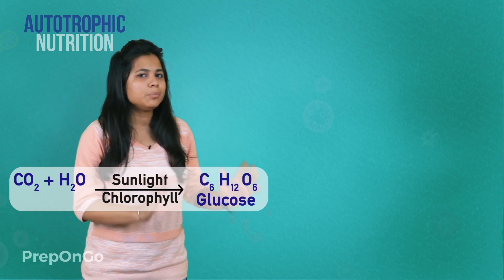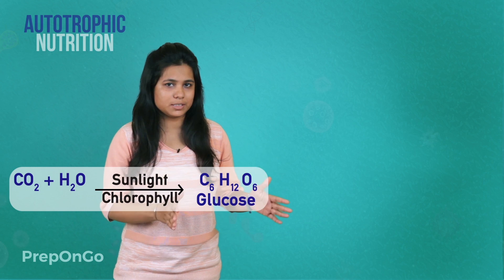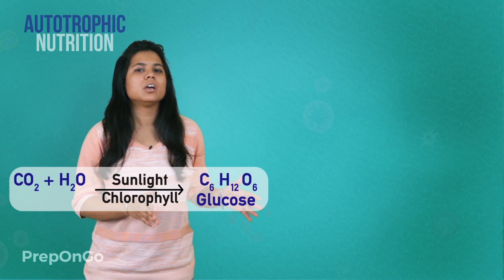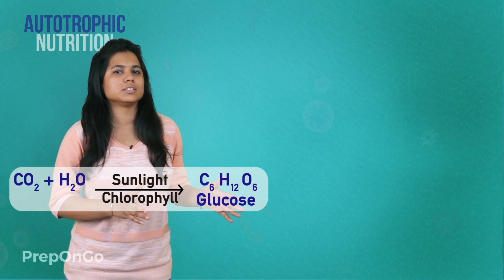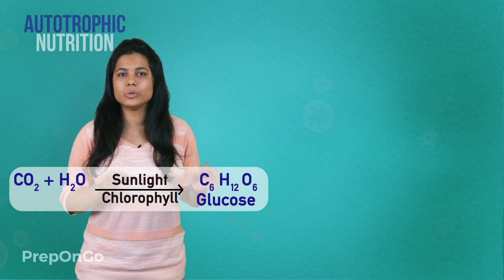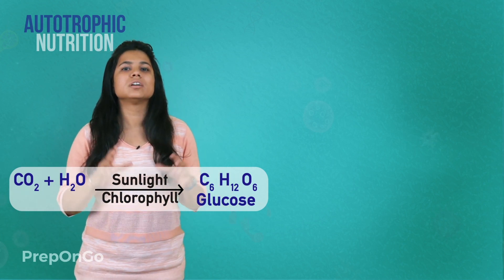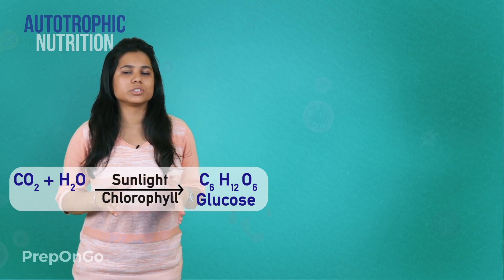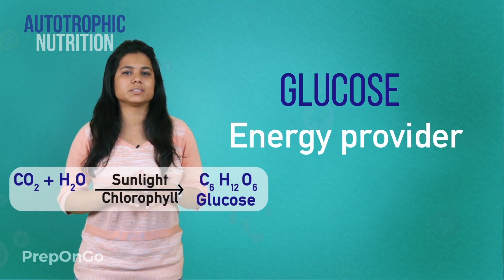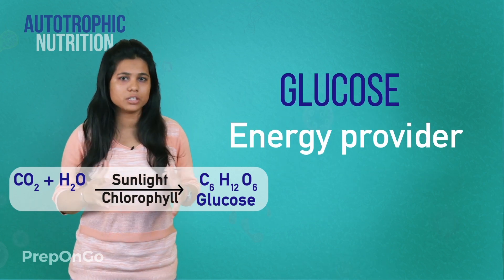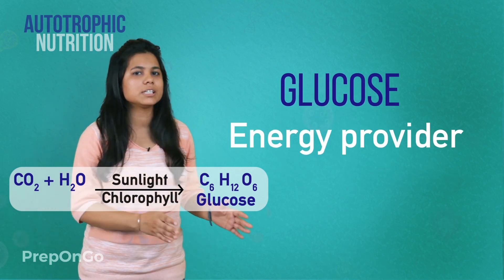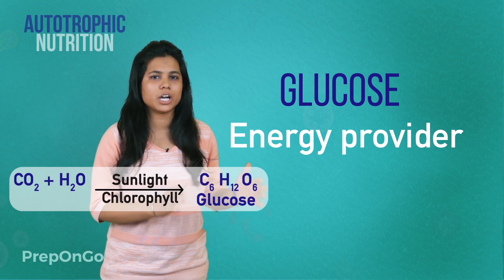The main product of this reaction is C6H12O6. This is a form of carbohydrate which we call glucose. Glucose is an energy provider, so this is the chemical energy we are talking about.